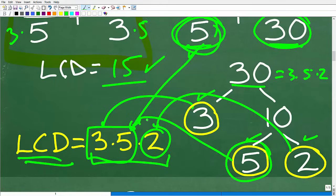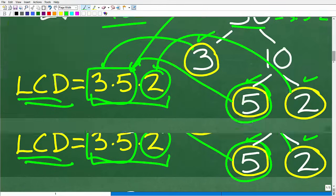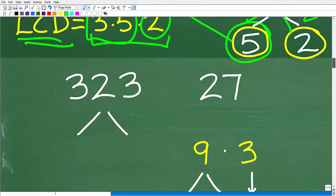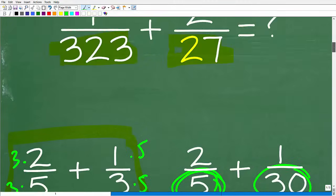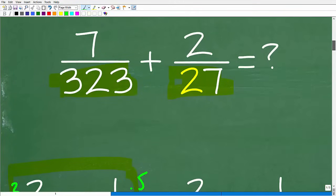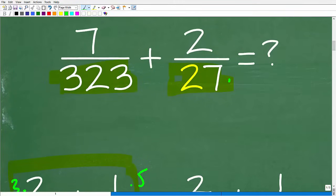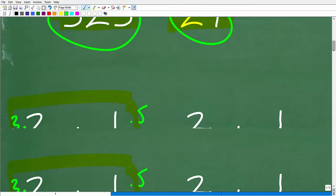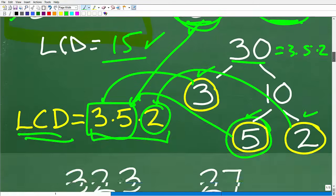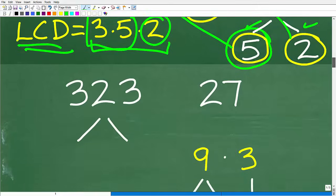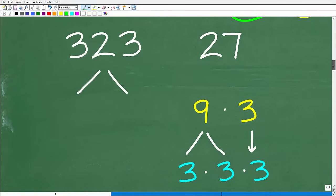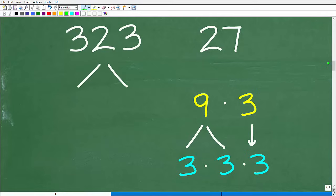But you need to understand the process because if we want to find the LCD of our problem, okay, kind of going back over here, 7 over 323 and 2 over 27, we have to prime factor each of these denominators, okay? And then we're going to have to go through the same process. So as I indicated in the beginning of this video, this is not going to be a fun process, even if you have a calculator, right?